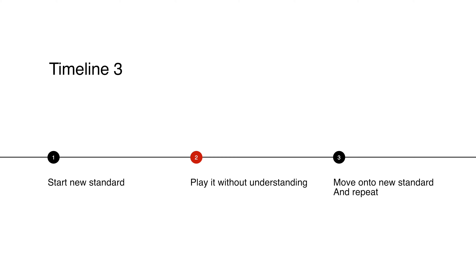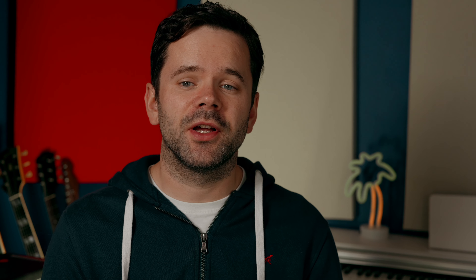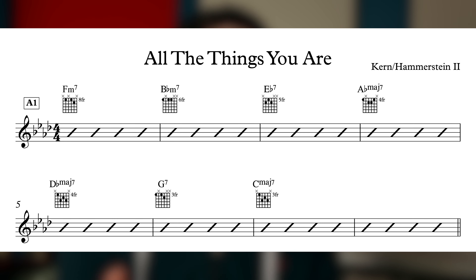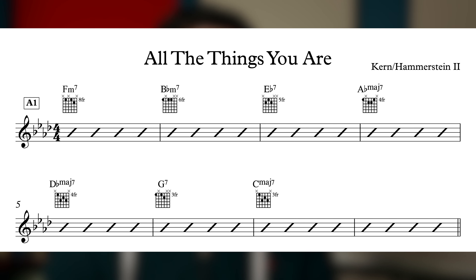Timeline three: start a new standard, play it without understanding it, repeat with all other standards in the future — which means you miss a massive learning opportunity, which is to make connections between songs, recognising similar chord progressions and movements, which makes it much easier to remember and hear standards. If someone's playing without understanding what's happening — say the opening to All The Things You Are, the first eight bars — they're literally just seeing F minor 7, B-flat minor 7, E-flat 7, A-flat major and so forth. Whereas someone that understands it appreciates they're in a key, going 6-2-5-1-4, then a secondary dominant, then leading to C major. It's not just a series of random chords. If you appreciate what's going on, you can more easily remember it because you understand it, and rather than taking it chord by chord, you see it as a chunk and understand its structure.